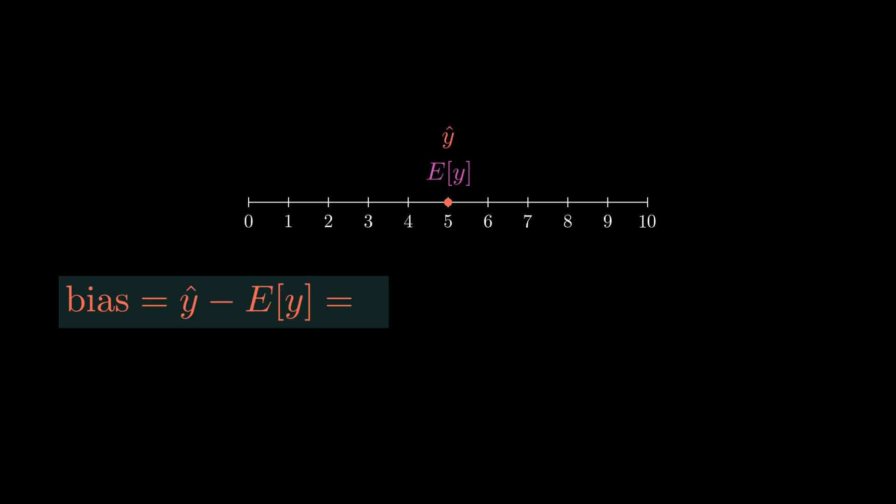Now, let's zoom out. In our previous videos, we discussed that in a simple linear regression, the best prediction Y-hat for a given input is the expected value of Y. In other words, the bias is zero. However, this can lead to a high variance in the model.